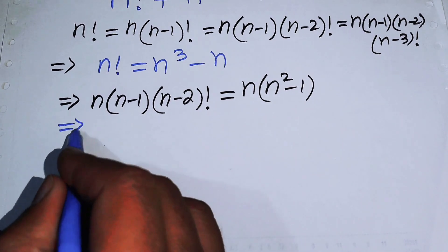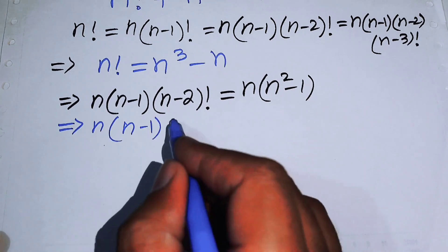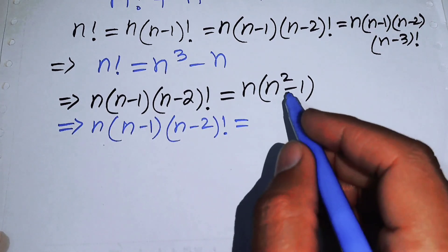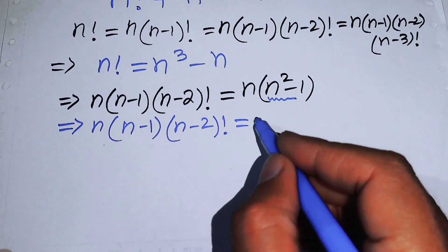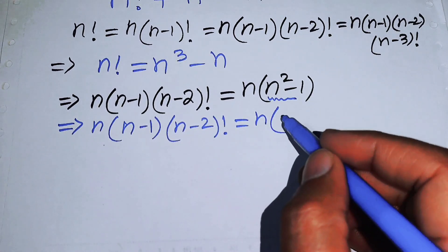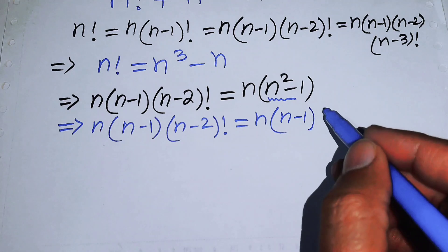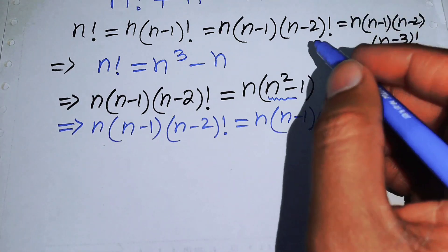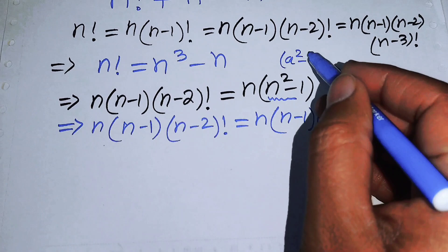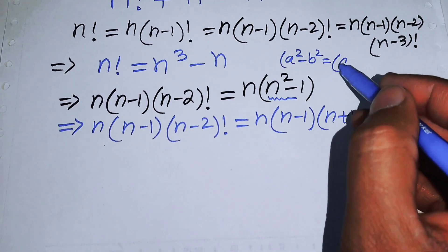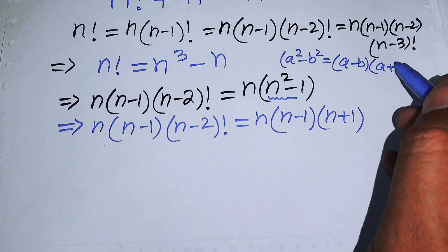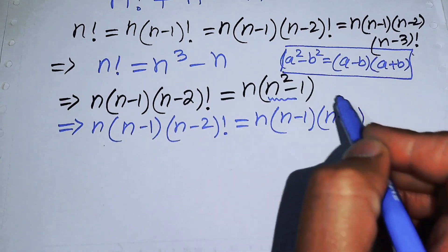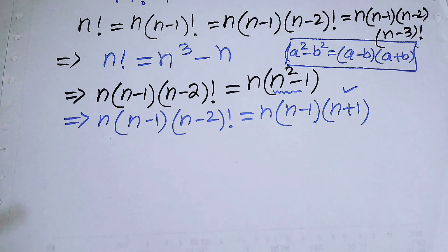In the next step, we simplify the right-hand side and obtain n times (n-1) times (n-2) factorial equals n times (n-1) times (n+1), because we use the difference of squares identity: a squared minus b squared equals (a minus b) times (a plus b).